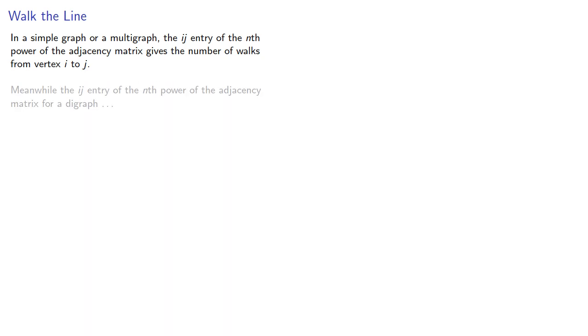Meanwhile, the ijth entry of the nth power of the adjacency matrix for a digraph also gives the number of walks from vertex i to j. However, there is an important twist.